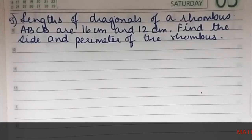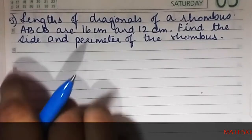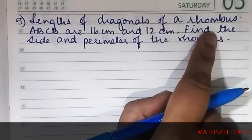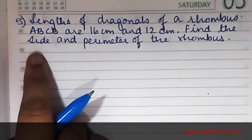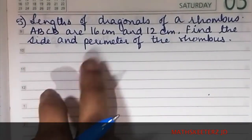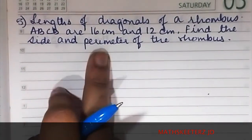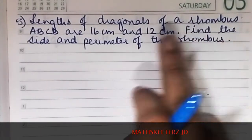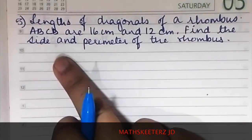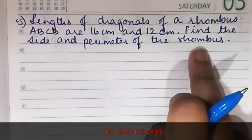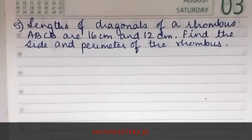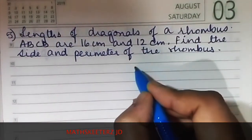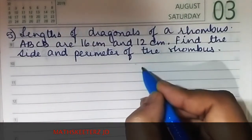Let's do sum number 5 now. Length of diagonals of a rhombus ABCD are 16 centimeters and 12 centimeters. Find the side and perimeter of the rhombus. Okay, let's draw the rhombus first.